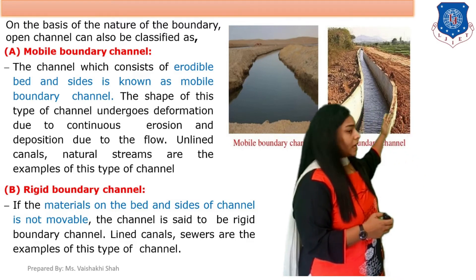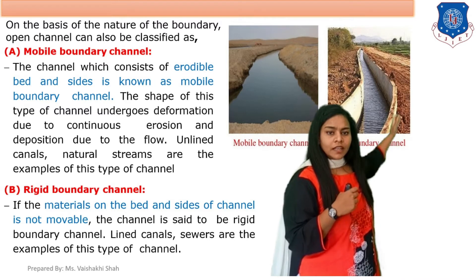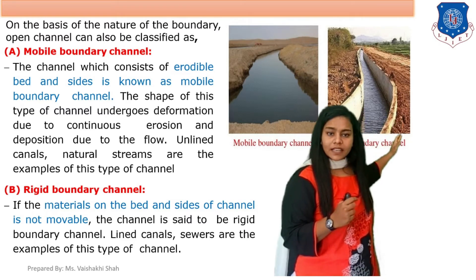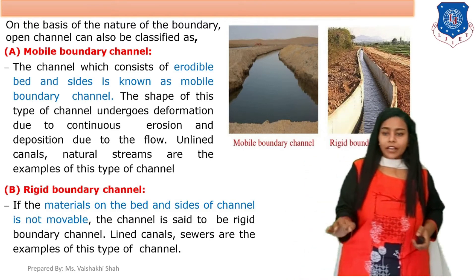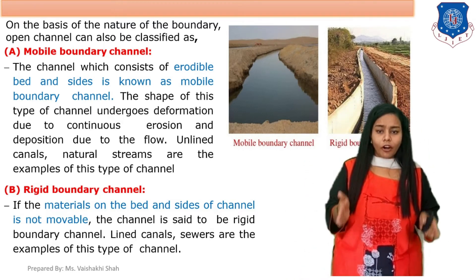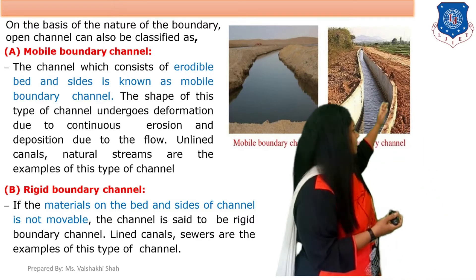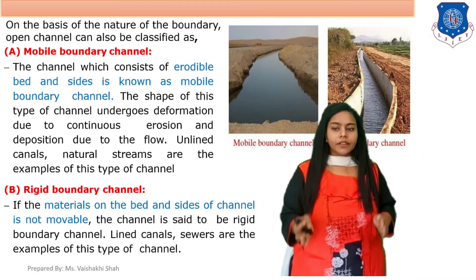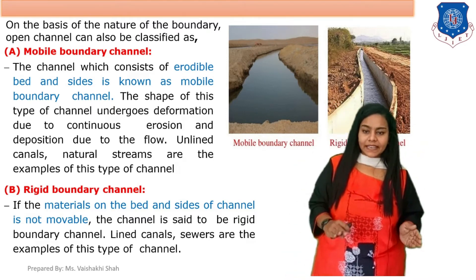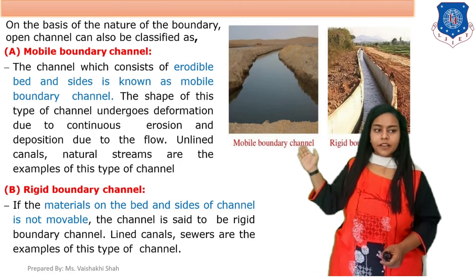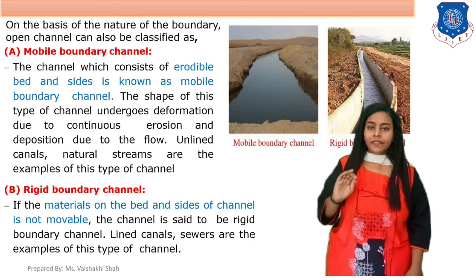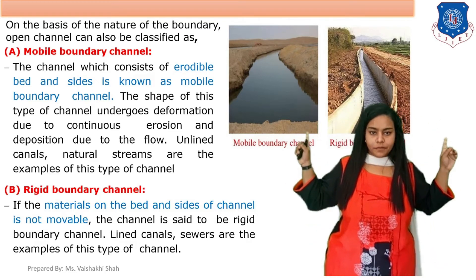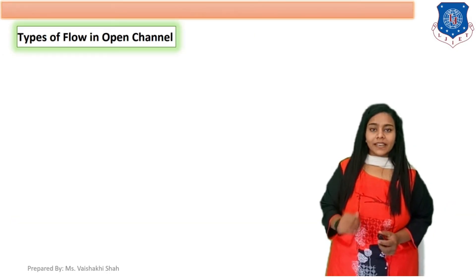On the other side, in a rigid boundary channel, the sides are properly constructed and no erosion occurs for any reason. If the material on the bed and sides of the channel is not movable — the material is fixed with properly constructed walls — it is called a rigid boundary channel. Lined canals and sewers are examples of rigid boundary channels. So channels are mainly divided into mobile boundary and rigid boundary channels.